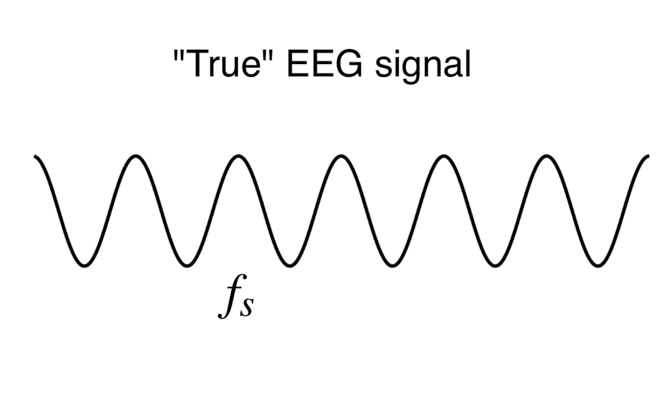Of course, we never observe the true signal. Instead, we observe a sampling of this signal, which depends on our sampling interval. Let's define that as delta. We'll consider three cases for different values of delta.